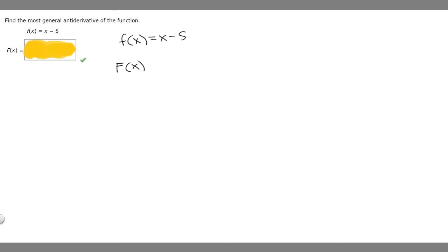We have x - 5. There's a rule we want to use to find the antiderivative of some variable raised to an exponent. In this case it's just 1. So we have x to the n. If we want to find the antiderivative of x to the n, what we do is: x to the n equals x to the n+1 over n+1.